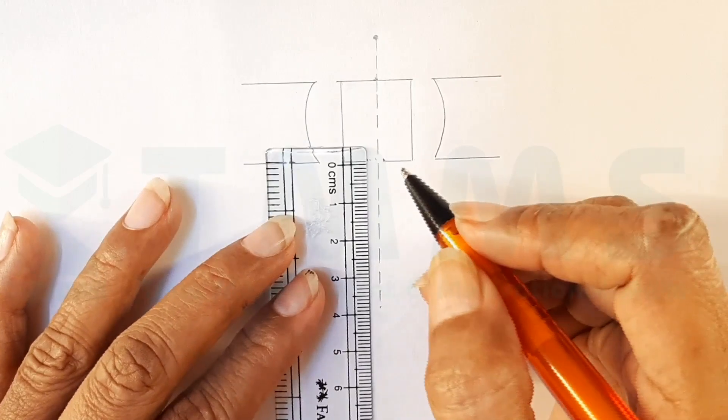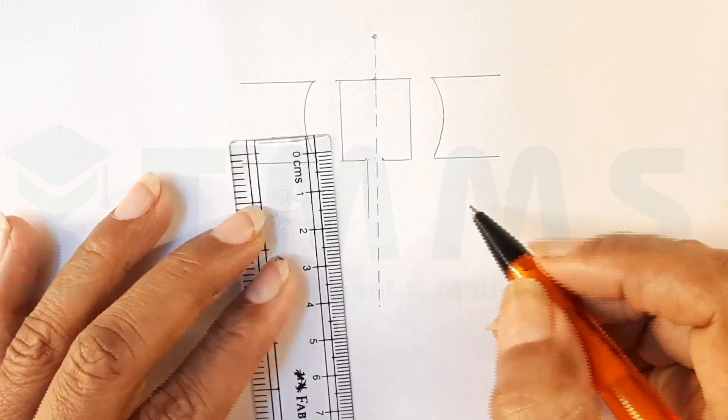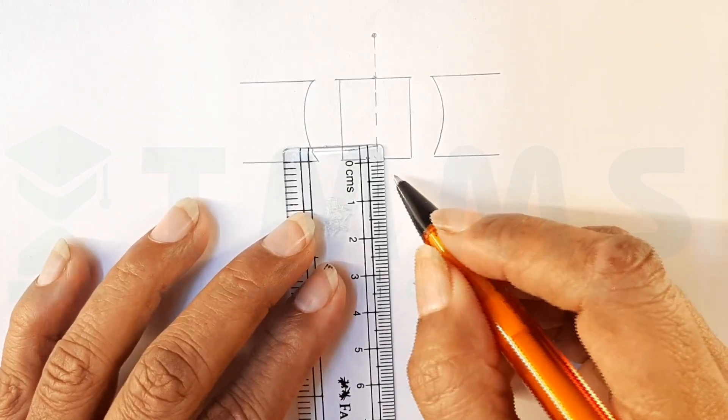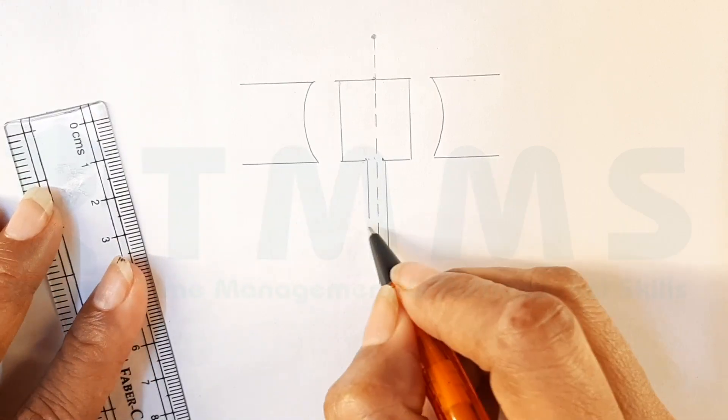Now, from here, coming down, we will take about 1.5 cm. And here, we will take about 3 cm. Okay?